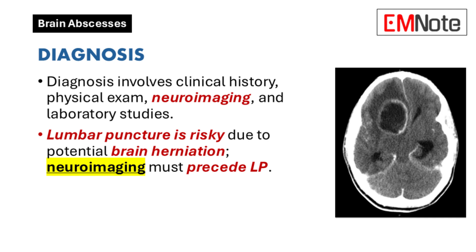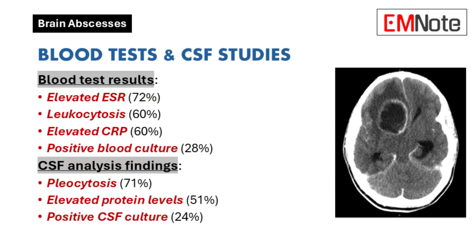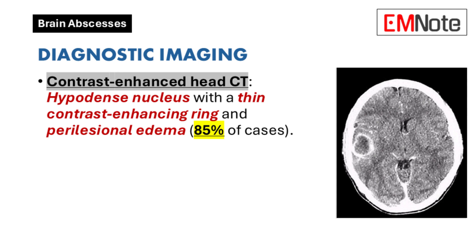Stereotactic aspiration is an alternative that allows for microbiological studies and can also serve as a therapeutic intervention. Blood tests often reveal elevated erythrocyte sedimentation rate (72%), leukocytosis (60%), elevated C-reactive protein levels (60%), and positive blood cultures (28%). Cerebrospinal fluid analysis typically shows pleocytosis (71%). Contrast-enhanced head CT scans typically show a hypodense nucleus surrounded by a thin contrast-enhancing ring and perilesional edema in up to 85% of cases.